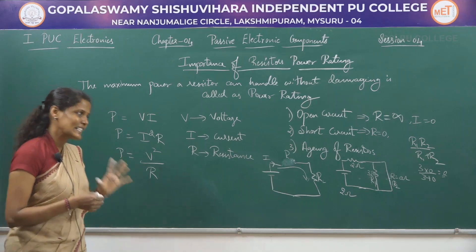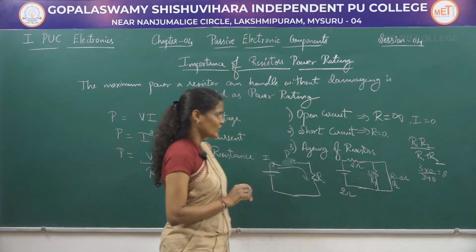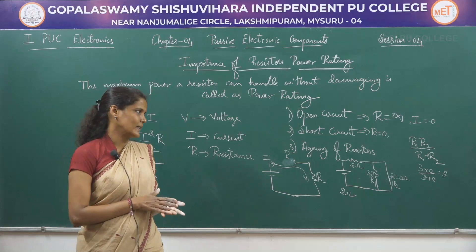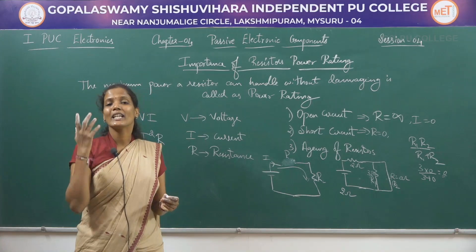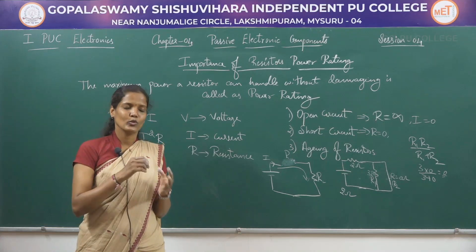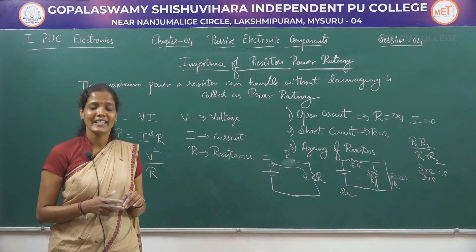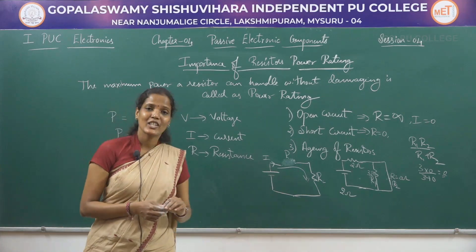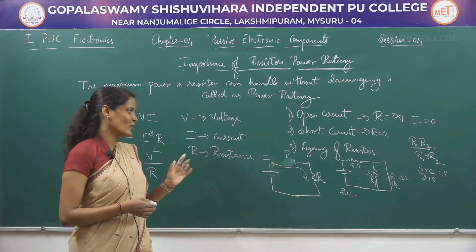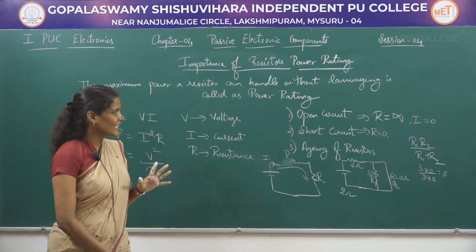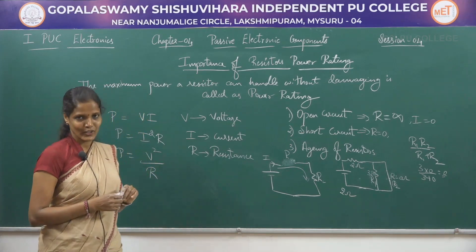A short circuit resistor is one whose resistance value is equal to zero. Now, aging of a resistor: the resistance value of a resistor will deteriorate with age or when used for a longer period of time. Whenever a resistor is used for a long period, its tolerance value will vary. Deterioration in the resistance value due to a long period of usage is called aging of a resistor. These are the three common problems: open circuit, short circuit, and aging of resistor.